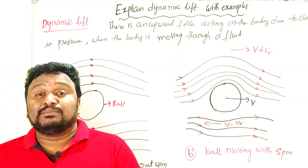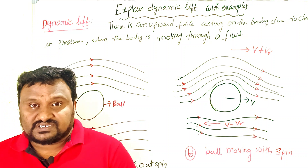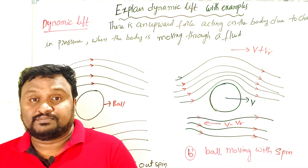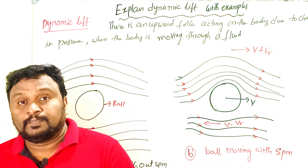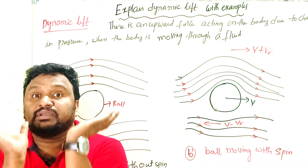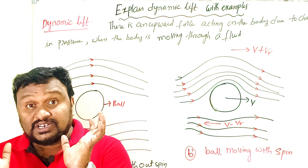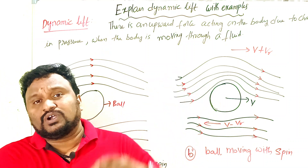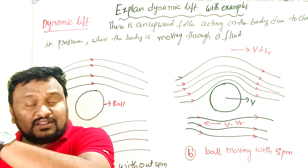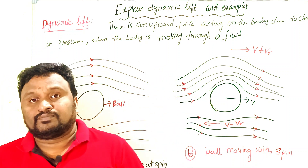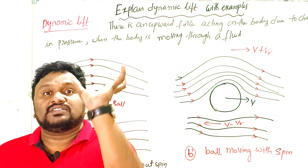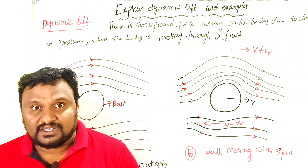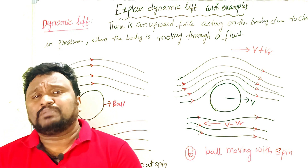What is meant by dynamic lift? There is an upward force acting on a body due to changing pressure when the body is moving through a fluid. Lift means we apply force in the upward direction. When a body is moving in air, there is some upward force acting on it because of the change in pressure — that is what we call dynamic lift. We can observe this in many daily life examples.